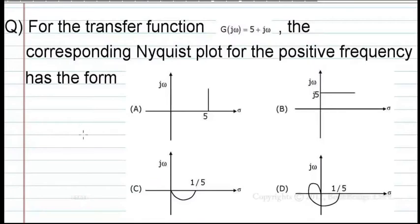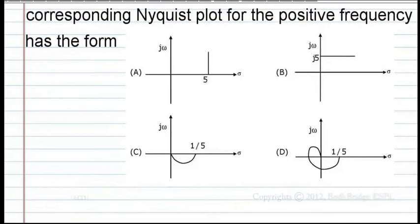For the transfer function g of j omega equal to 5 plus j omega, the corresponding Nyquist plot for the positive frequency has the form. The given options are like this.